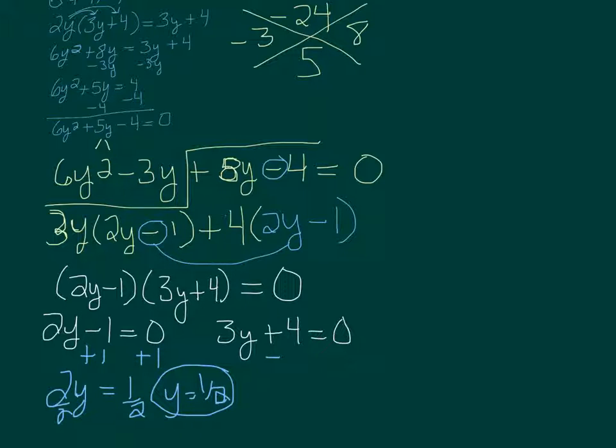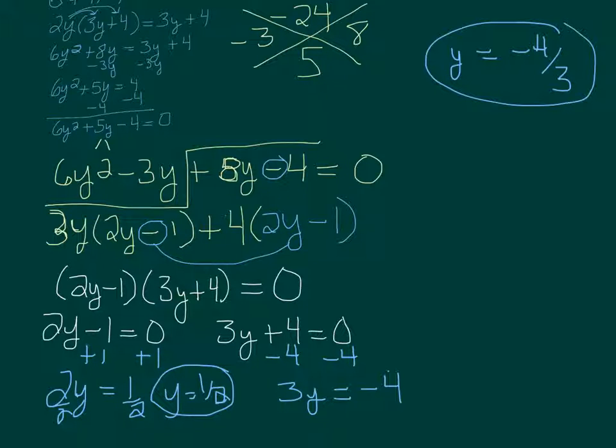Over here, I want to subtract 4 on both sides, and I get 3y equals negative 4. Then divide by 3. So y equals negative 4 thirds. Alright, I hope that helps.